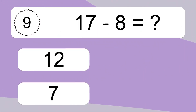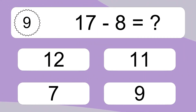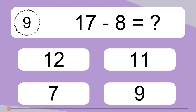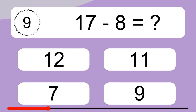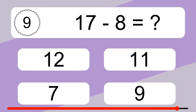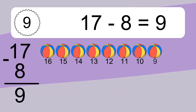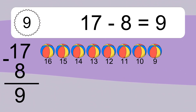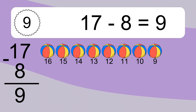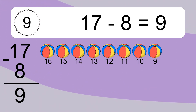Seventeen minus eight equals what? Seventeen minus eight equals nine. Let's count it: sixteen, fifteen, fourteen, thirteen, twelve, eleven, ten, nine.